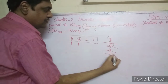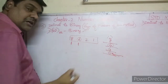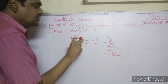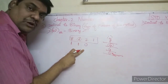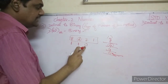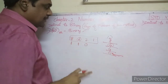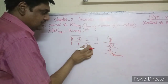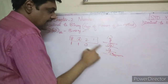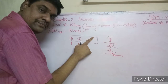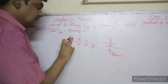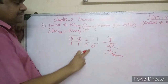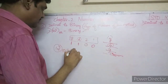Now compare 0 with 2 — 2 is greater, so we put a 0. Then compare 0 with 1 — 1 is greater, so we put a 0. The period number (remainder) is now 0. So the answer is: 12 base 10 is equal to 1100 base 2.